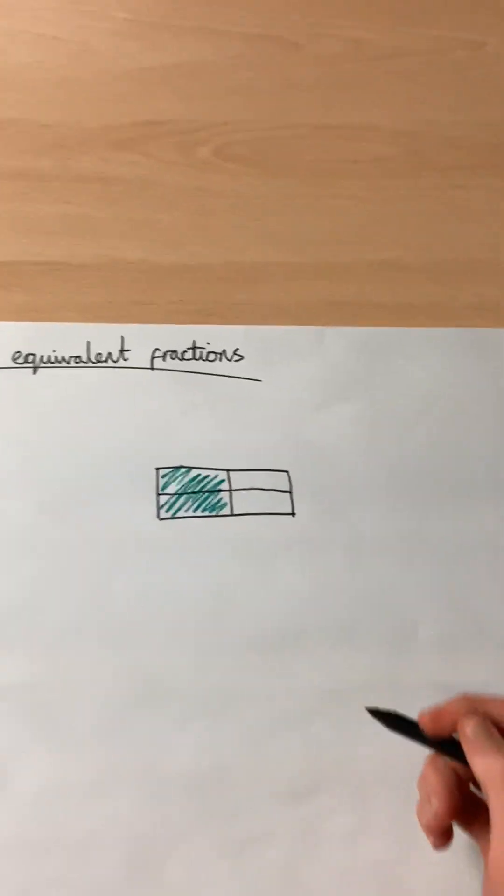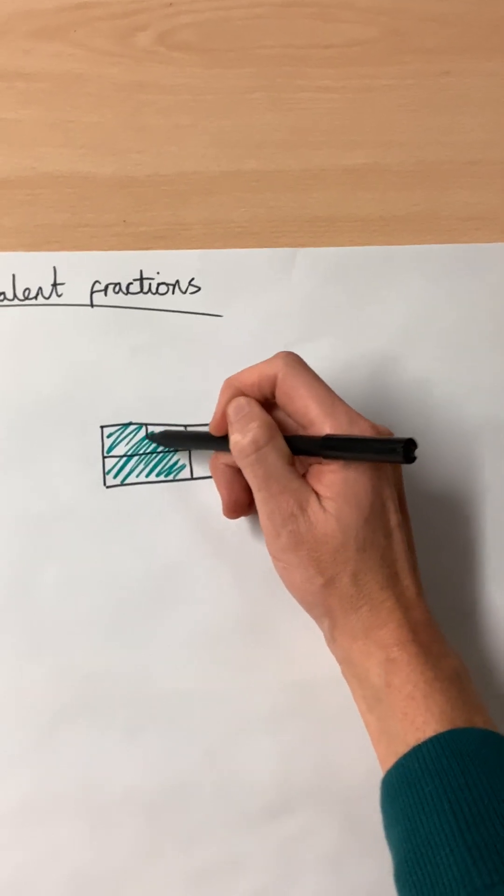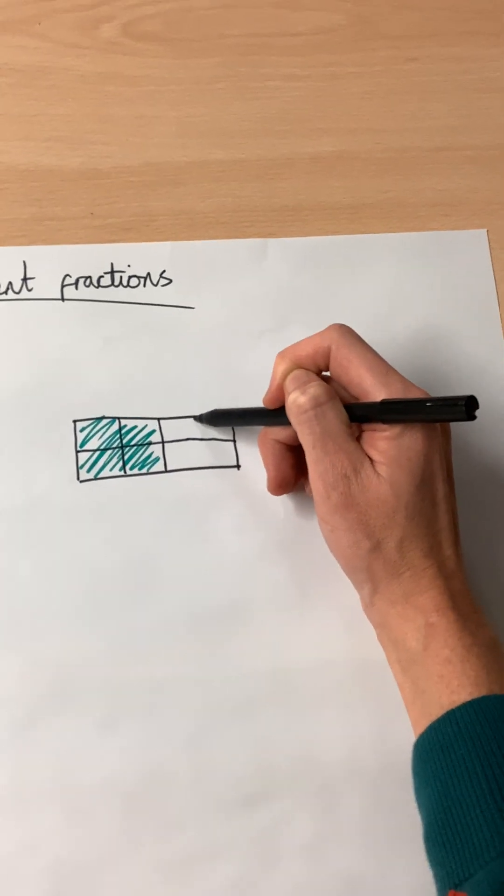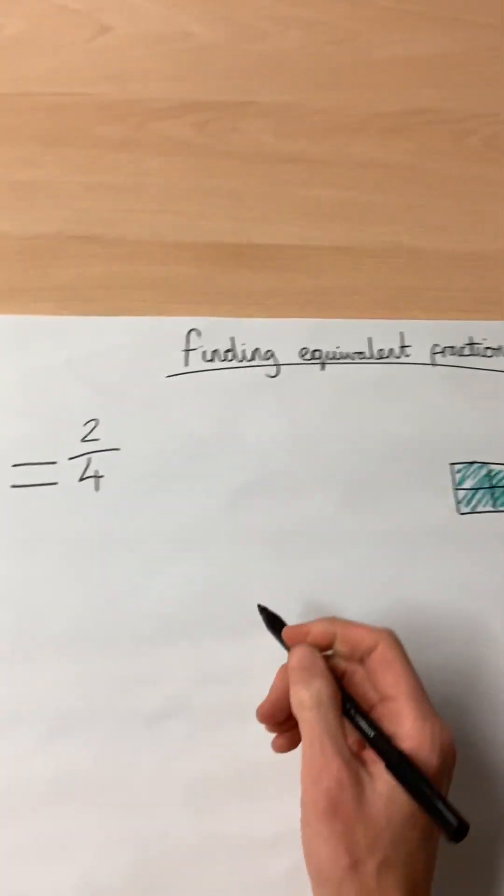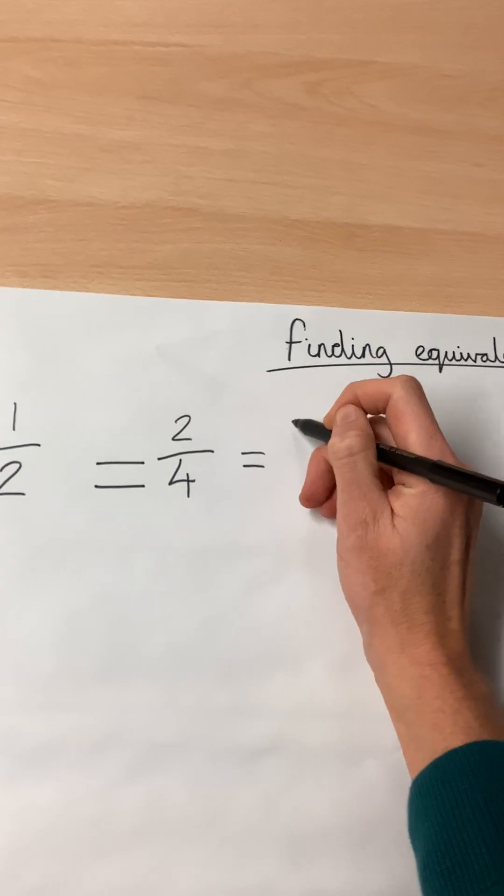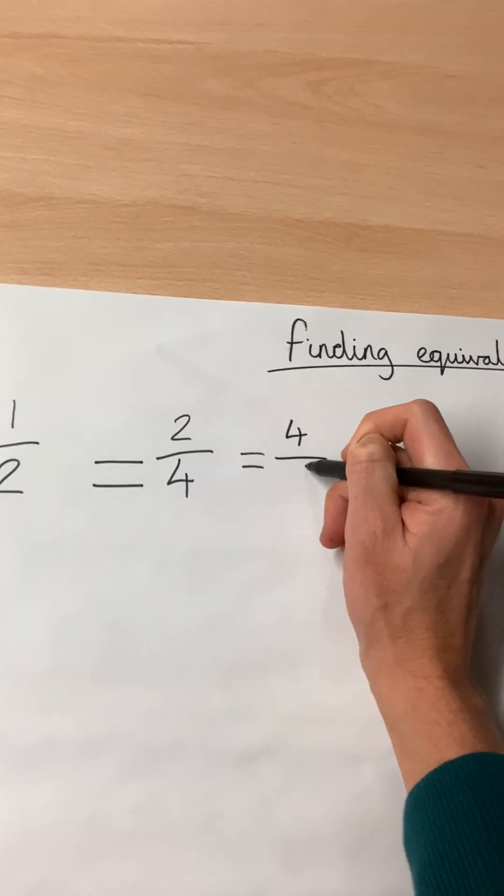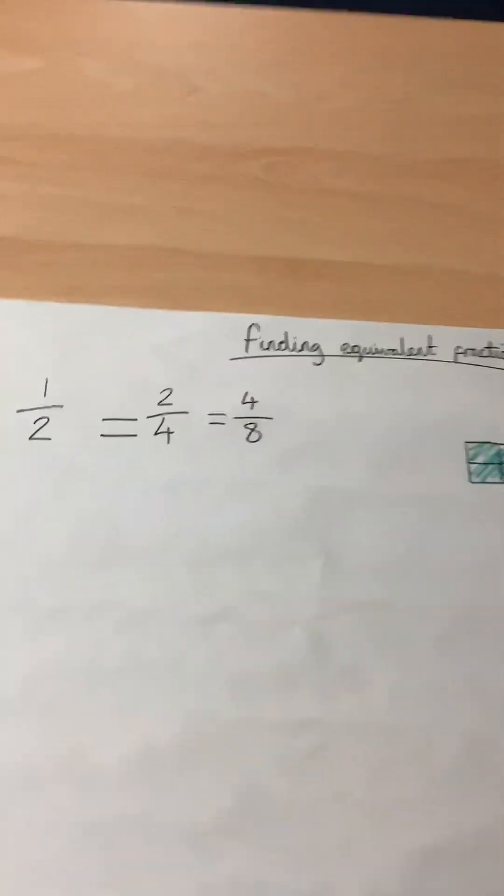If I was to chop it all in half again, I have four pieces coloured in out of eight. So, one half is the same as two quarters, which is also the same as four eighths.